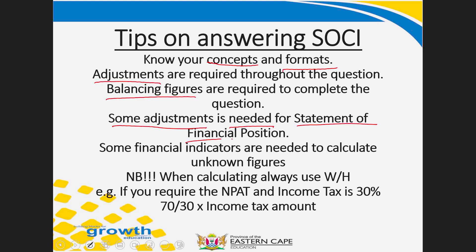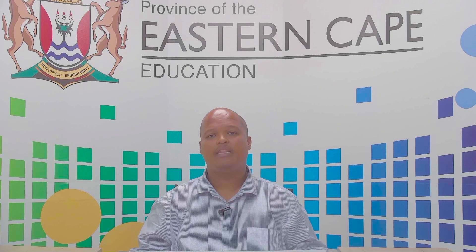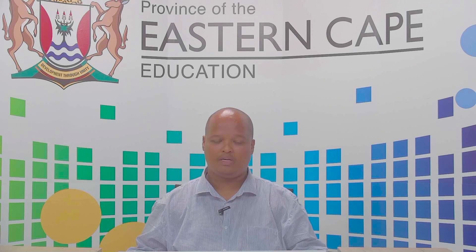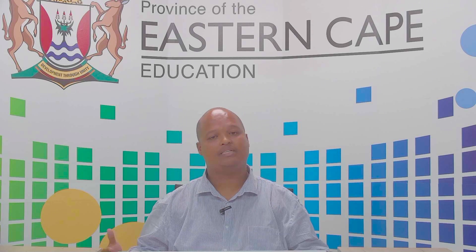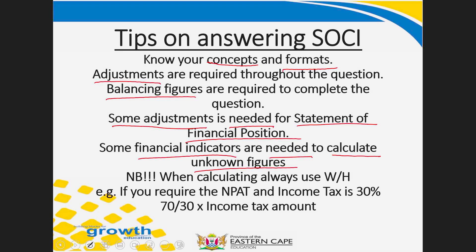Some adjustments are also needed for the statement of financial position. For example, if you increase the rent income, you know money is still owed to the business — which we call accrued income — and that accrued income must be transferred as a positive figure into the statement of financial position. Some financial indicators are also needed to calculate unknown figures. If you are given the current ratio and the current assets are known, you use that ratio to calculate either the current assets or the current liabilities, and from that you can also determine balancing figures such as cash and cash equivalents.